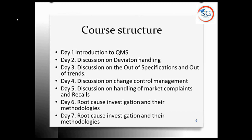OOS — out of specification — occurs when you analyze a product in a QC lab and the result falls outside the limit. For example, if the assay limit is 90% to 110% and a result for a particular batch comes back as 111%, that is an OOS. OOT — out of trend — occurs when, across a campaign of batches, results are consistently around 100 but one batch comes back at 108, indicating a trend deviation. This will be discussed in detail on Day 3.